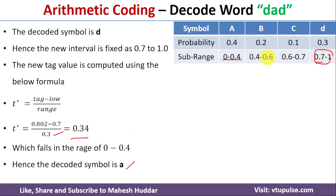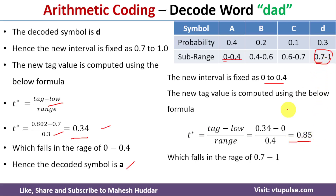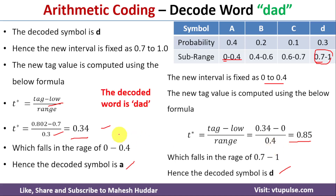Since 0.34 lies between 0 and 0.4, the new interval is fixed as 0 to 0.4. We find the new tag: new_tag = (0.34 − 0) / 0.4 = 0.85. Since 0.85 lies between 0.7 and 1, the decoded symbol is D. Hence the decoded word is DAD.